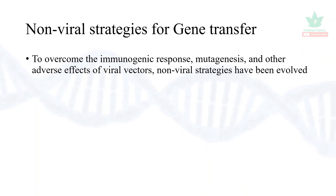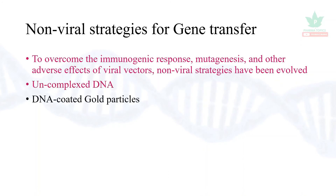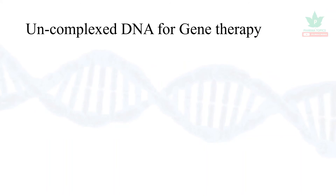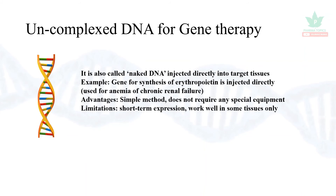There are also non-viral strategies for gene transfer, as viral strategies have problems of immunogenic response, mutagenesis, and adverse effects. One non-viral method is uncomplexed DNA, also called naked DNA — the DNA with the good gene is directly injected into the target tissues. An example is the gene for synthesis of erythropoietin injected directly into patients with chronic renal failure-associated anemia. It is very simple and does not require special equipment, but its limitations are short-term expression and it doesn't work in all tissues.